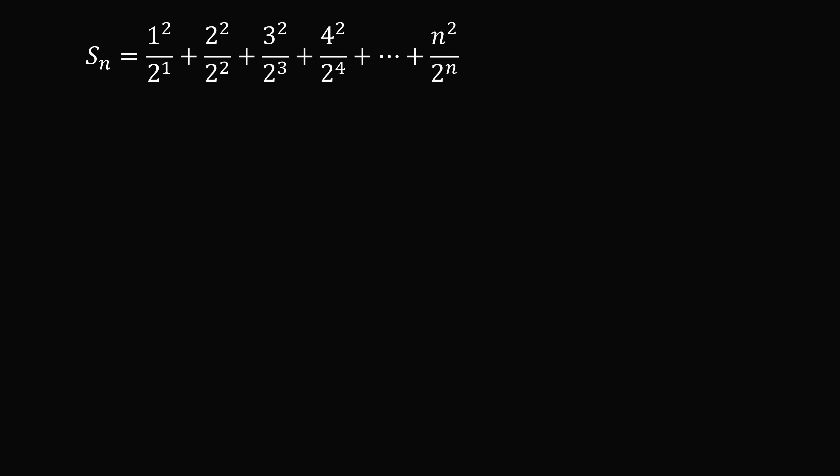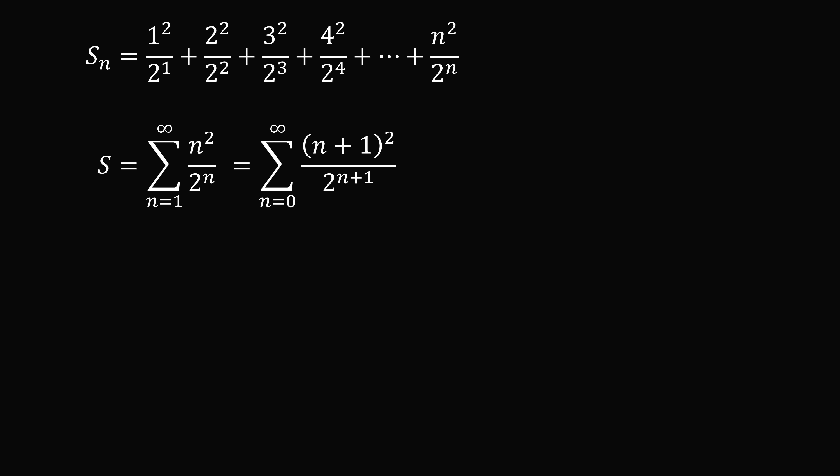Now another way is to consider sequences. We have this term Sn — we'll look at the sum up to the nth term. We can write this in summation form as the sum from n equals 1 to infinity of n squared over 2 to the power of n. We can re-index this going from n equals 0 if we have (n+1) squared over 2 to the power of n+1. Since the n equals 0 term is 0, we can also re-index from n equals 0 to infinity of n squared over 2 to the n. These are all just different ways of writing the same sum.